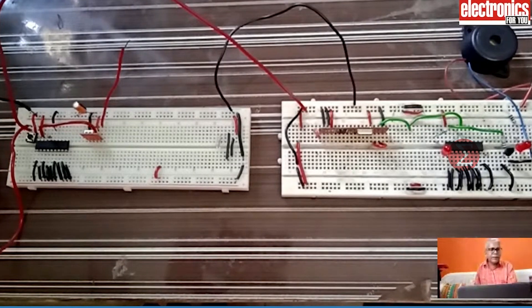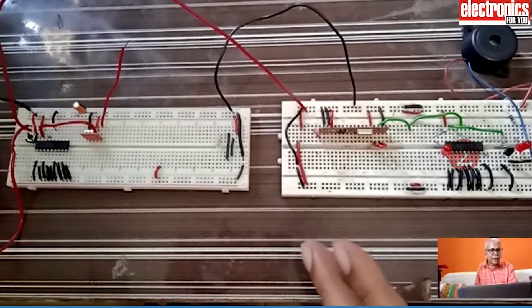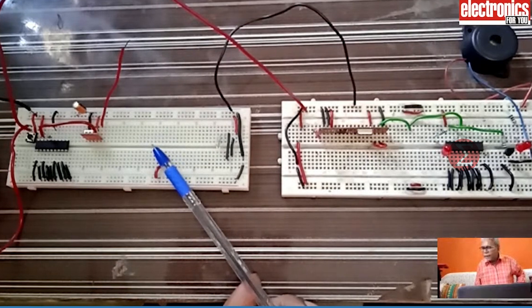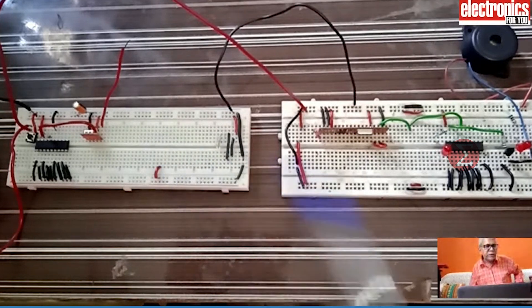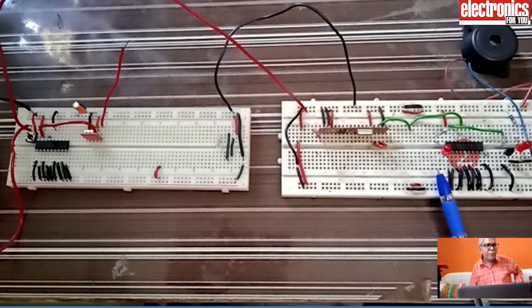This is the prototype of the circuit. To generate the actual call bell, you can make this circuit on a PCB. Put this transmitter circuit at the door, or in some room, and receiver circuit at the place where you want to hear the bell.